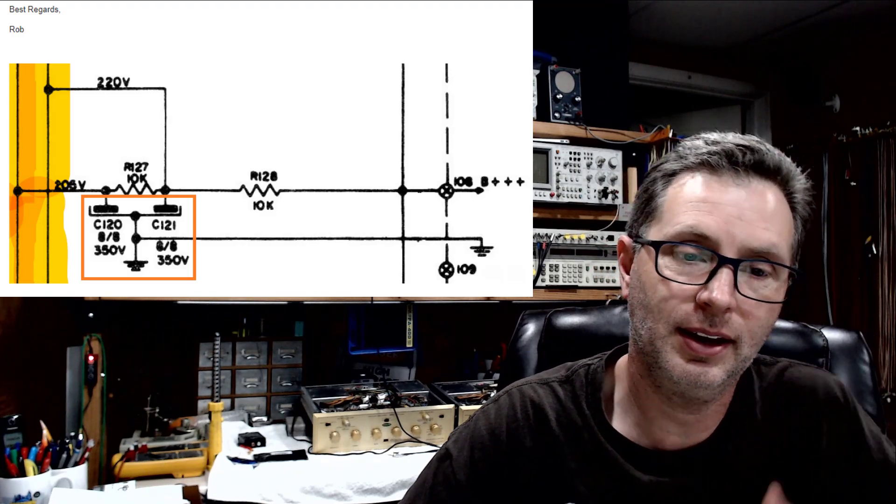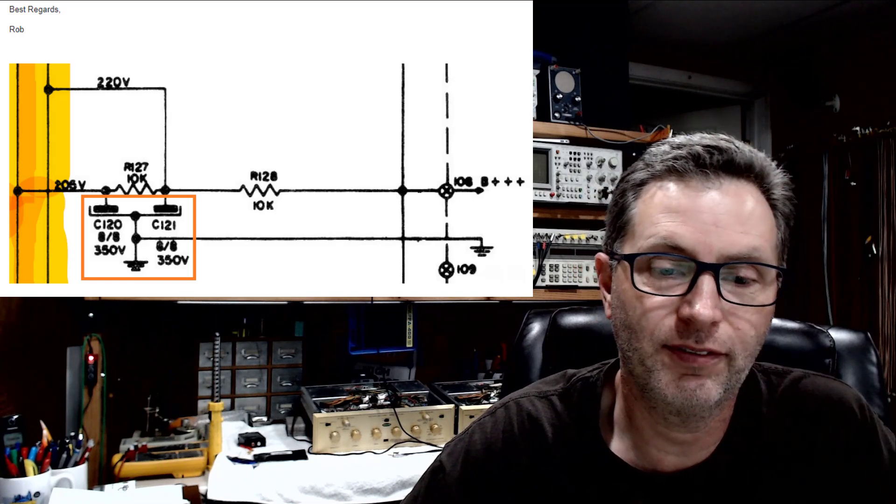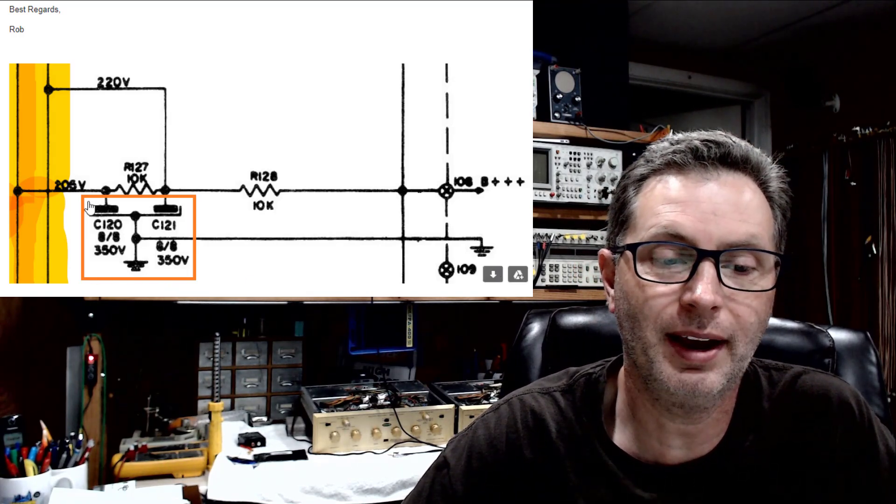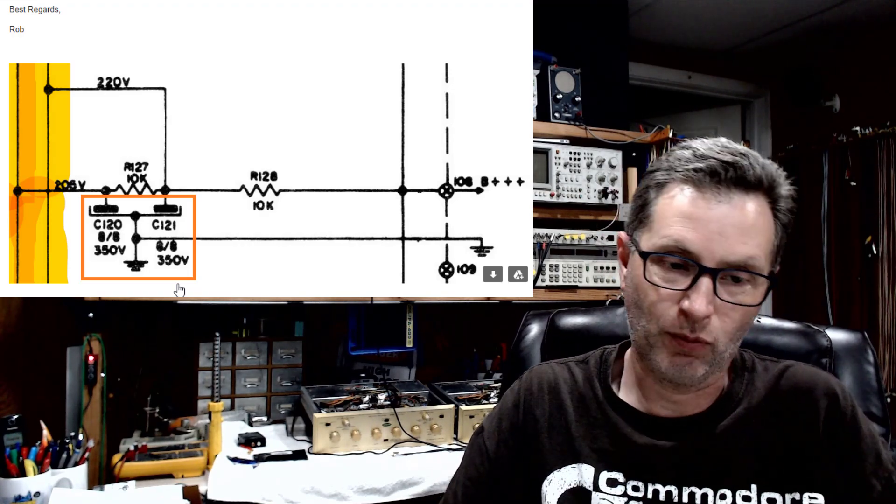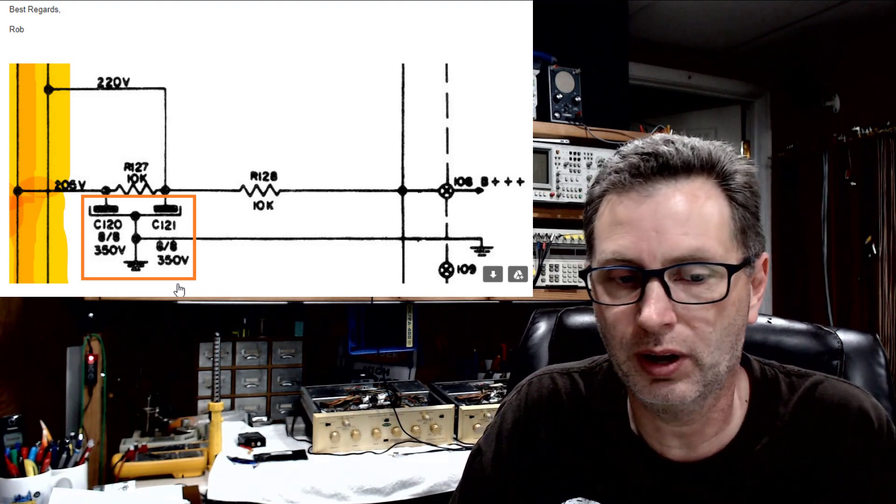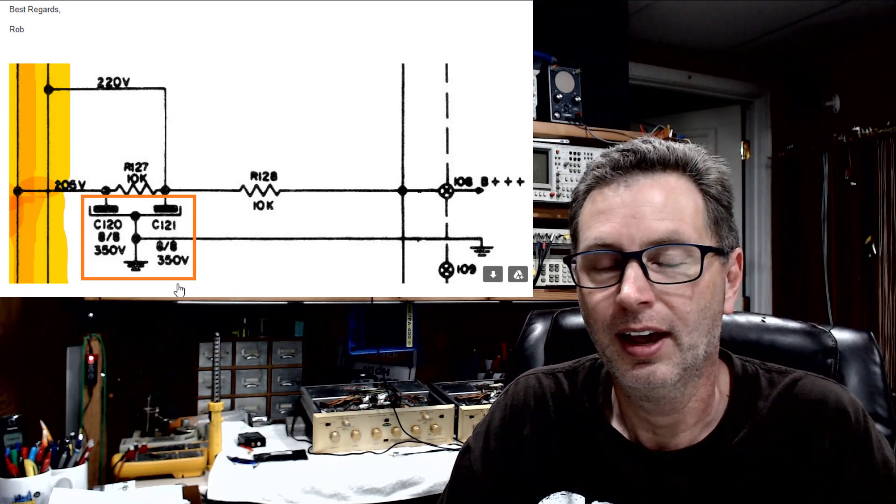This is a question that comes to us today from Rob in Canada. He's working on a piece of Phillips equipment and he's asking: 'Hey Mark, on the schematic, what is this device right here in orange?' Well Rob, it's not really that much of a mystery. What it is is a multi-section capacitor. In other words, it is a single device that inside of it has two capacitors.